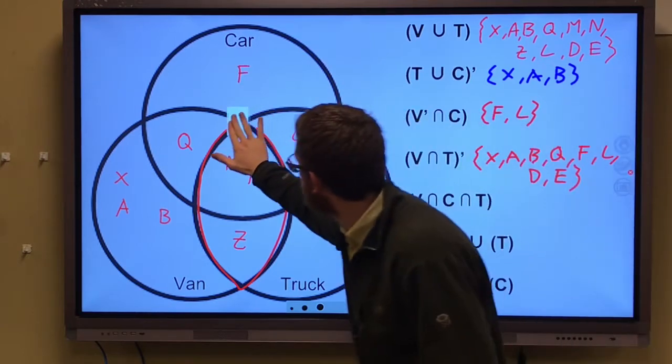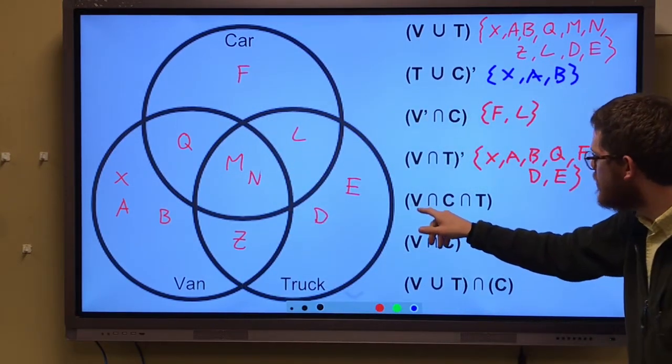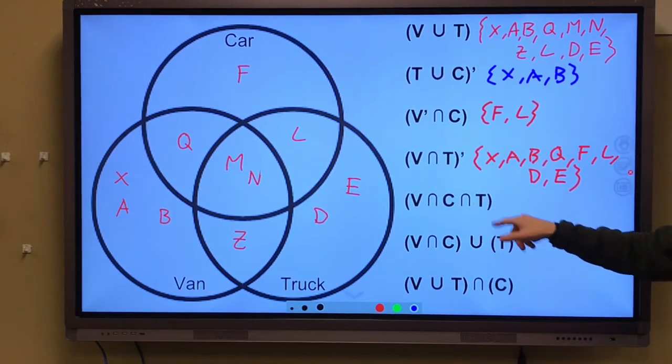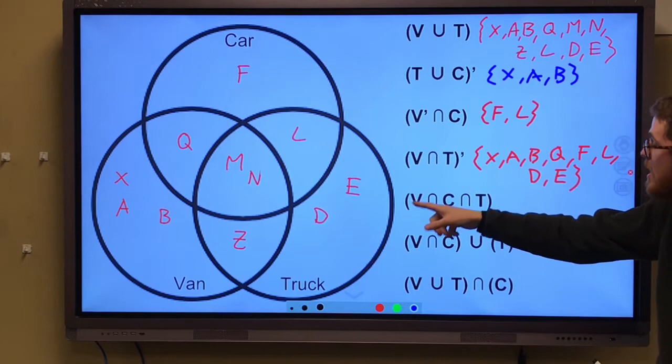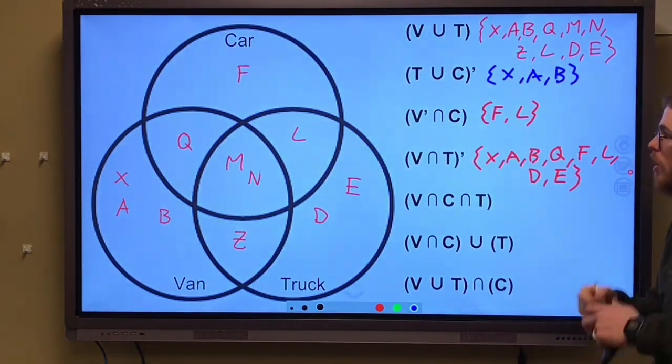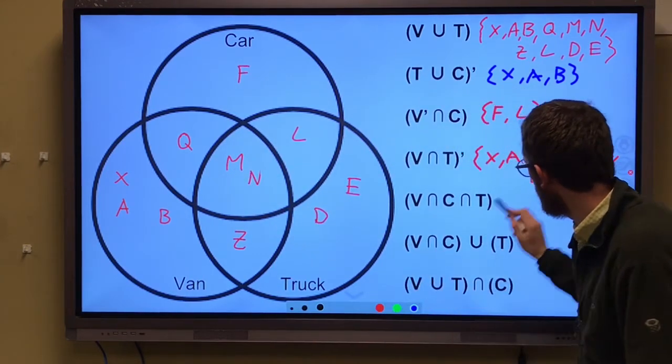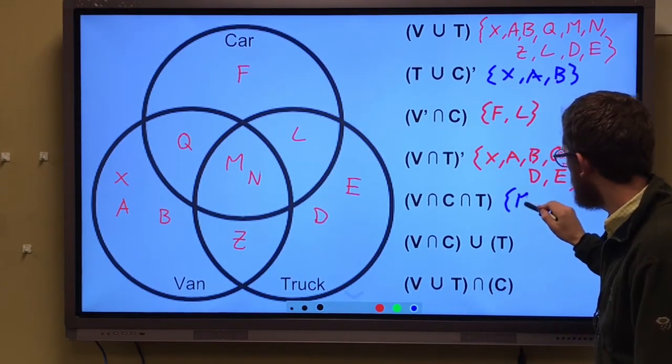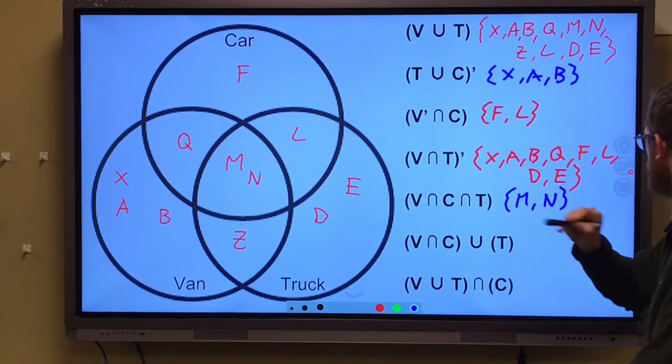Now check out this next one. This next one gets fun. V intersection with C intersection with T. V and C and T. A van and a car and a truck. All three of these things. That's where all three come together. That was, what we say, Monique and Naomi, right there.